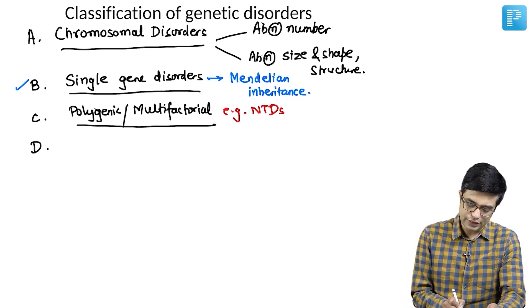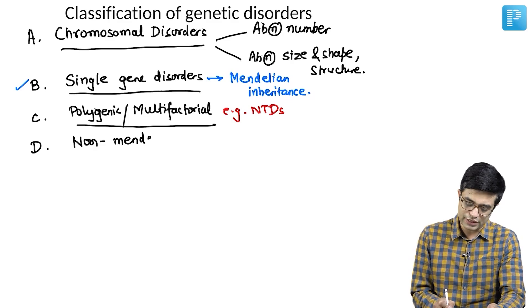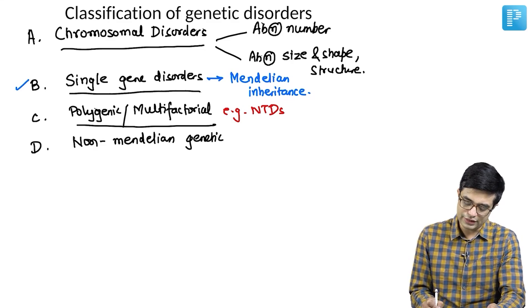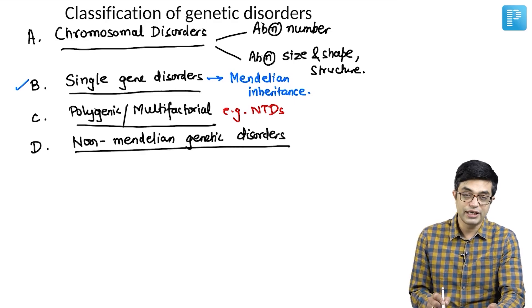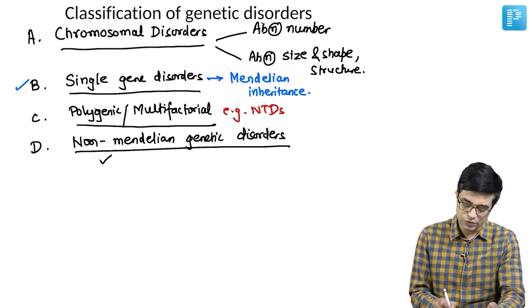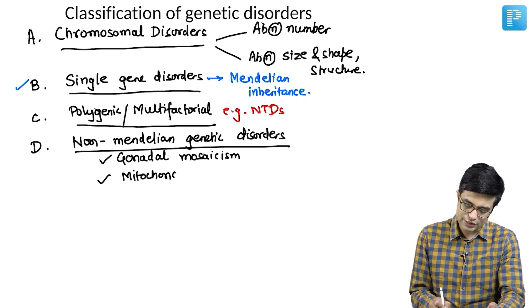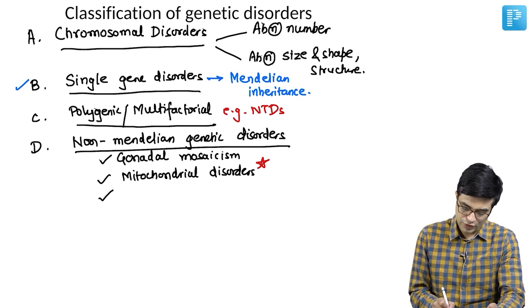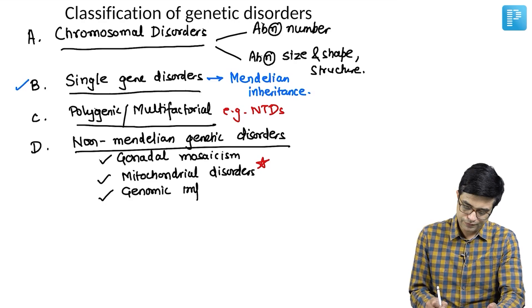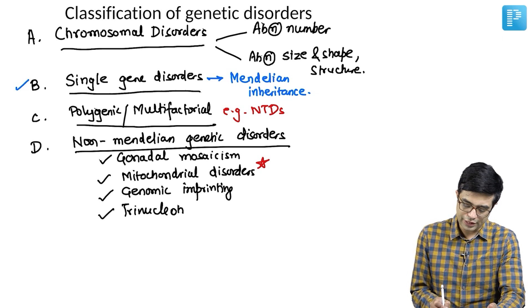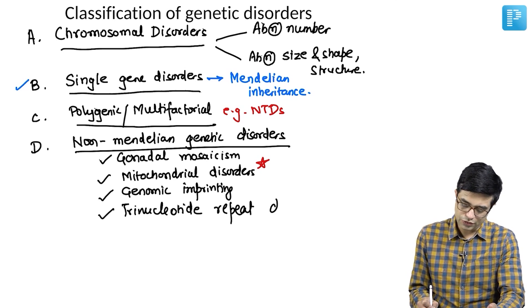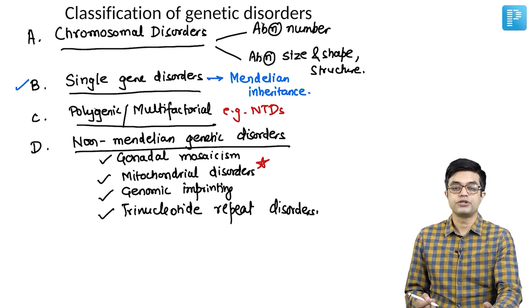And the fourth category are the non-Mendelian genetic disorders. They are atypical genetic disorders. Earlier, the term atypical was used. That term is no longer used. Non-Mendelian genetic disorders include gonadal mosaicism, also called germline mosaicism, mitochondrial disorders, from entrance point of view mitochondrial disorders is the current hot topic, genomic imprinting, and trinucleotide repeat disorders. This is the classification you need to remember.